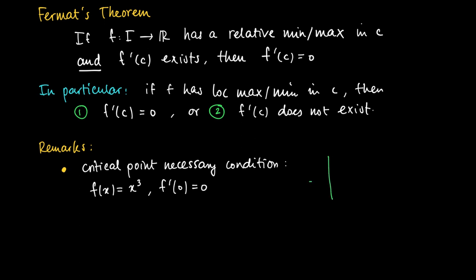But we also know that x to the power of 3 has no extreme value, especially not in x equals zero. So we can have stationary points without relating to extreme values of a function.